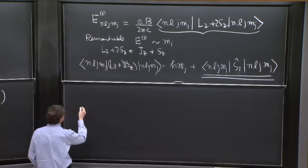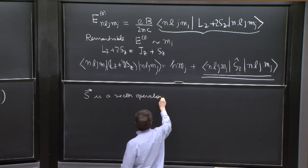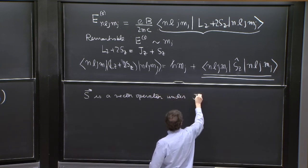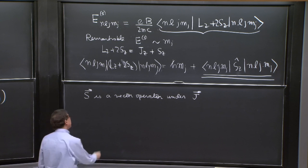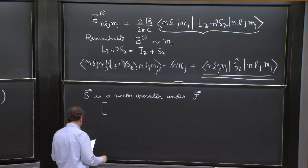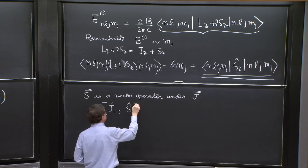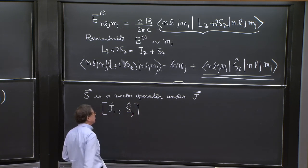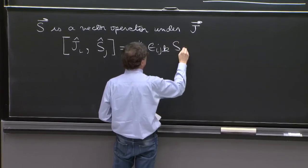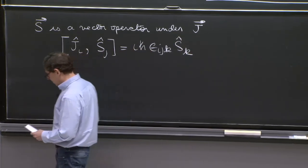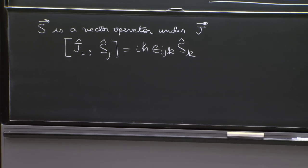So suppose what does it mean to say that S is a vector operator under J? It is to say that for J, S is like a vector. And that is a concrete statement that you should check whether it's true. The statement is that Ji with Sj, here this i and j run from 1 to 3, is equal to i h bar epsilon ijk Sk. That is the statement that S is a vector operator.